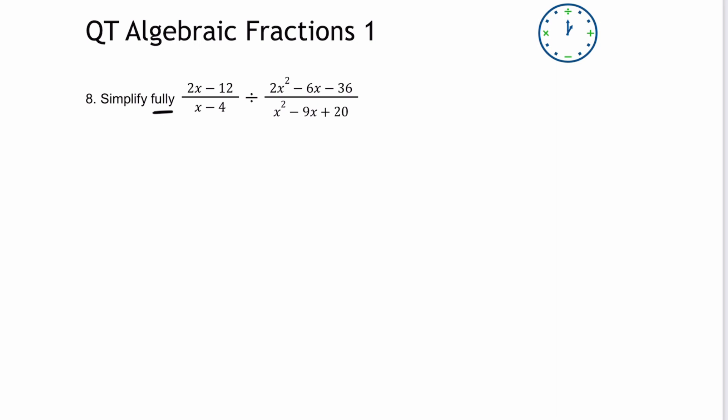These two algebraic fractions. So the first thing I'm going to do is have a look at my first fraction, and I'm going to factorise it for 2. So I get 2 multiplied by x minus 6, all divided by x minus 4.